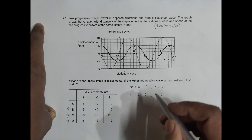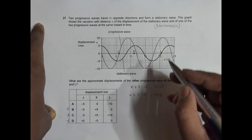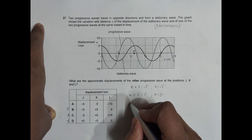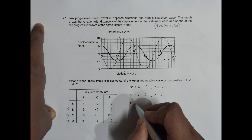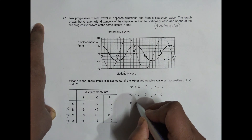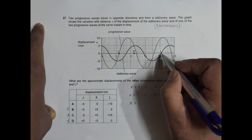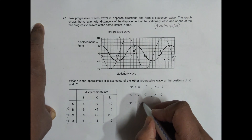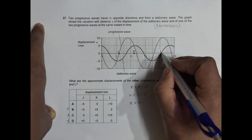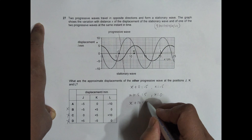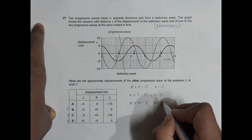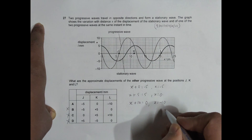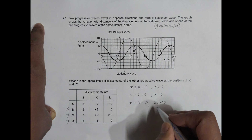To confirm, let's go to point L as well. At L, the displacement of the shown progressive wave X plus almost 10 equals the resultant, which is 0. So this gives X equal to minus 10.